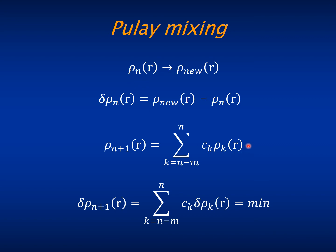So you have to somehow also mix it with some part of the output densities, and not only of the input densities. So you will also have a mixing weight for the output part of the densities. With this, we finish this second presentation, and I wish you a nice rest of the course.